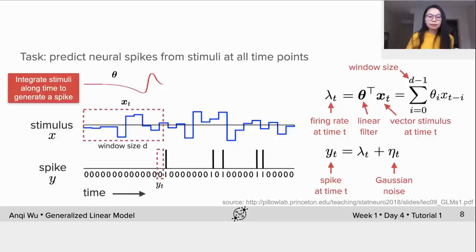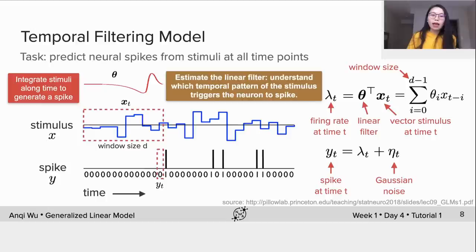Here's an example of yₜ. The model that achieves such an encoding task is known as temporal filtering model. The goal is to estimate the linear filter θ so as to understand what temporal pattern of the stimulus triggers the neuron to spike.